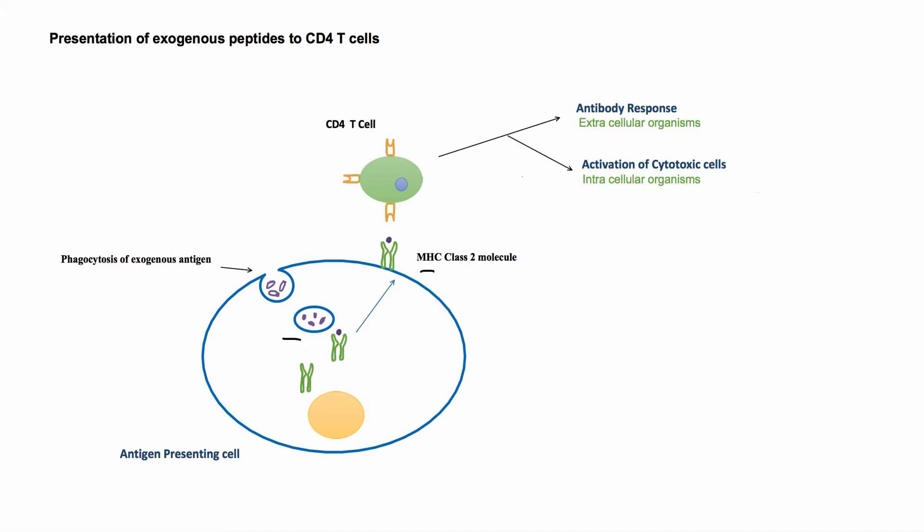Naive CD4 or helper T cells recognize peptides presented on HLA class 2 molecules. These cells initiate and organize the immune response. The immune response can be mainly an antibody response if the antigen was derived from extracellular organisms, or it can be mainly activation of cytotoxic cells, including cytotoxic T cells, that result in lysis of cells presenting peptides derived from pathogens or transformed cells. So the function of HLA class 2 molecules is to present antigens processed by antigen presenting cells to CD4 T cells.